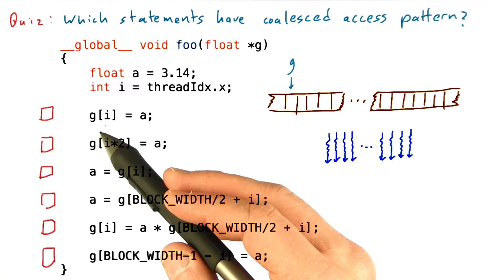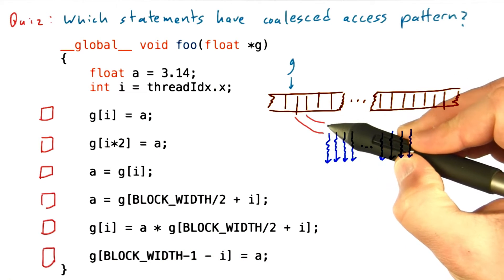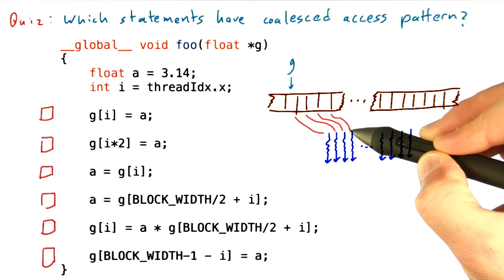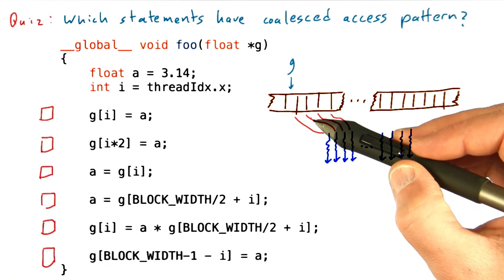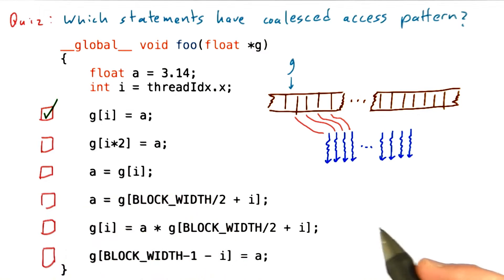And we're just going to reason out where each of these threads is accessing in memory. So in the first case, g sub i equals a. Well, every thread is simply accessing a location in memory defined by its thread index. This is exactly the example we've been talking about. A given set of threads will be accessing a bunch of adjacent contiguous locations in memory. So this case is clearly coalesced.